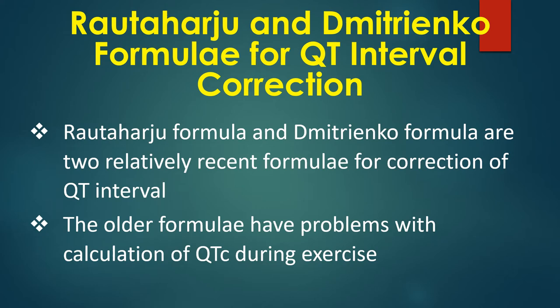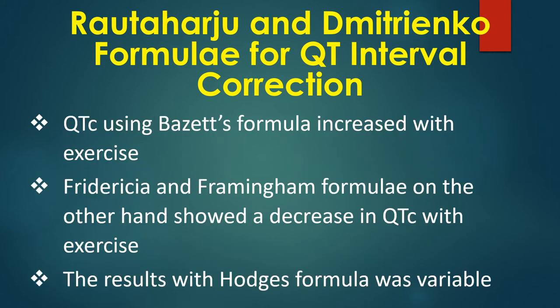The older formulae have problems with calculation of QTC during exercise. QTC using Besset's formula increased with exercise, while Friedrichia and Framingham formulae showed a decrease in QTC with exercise.